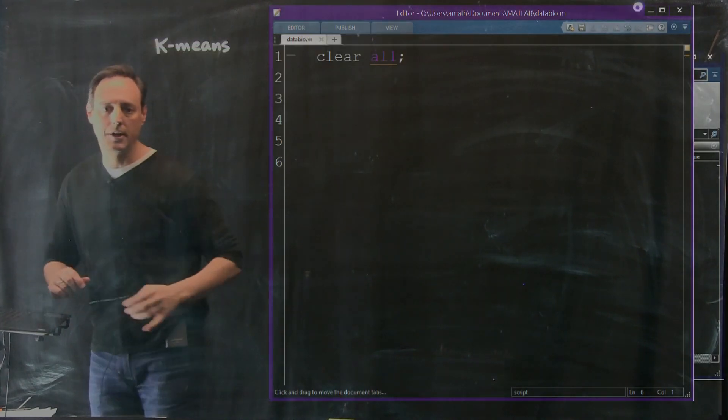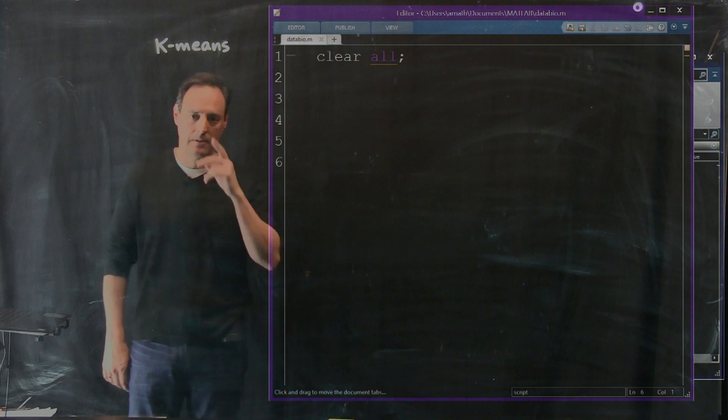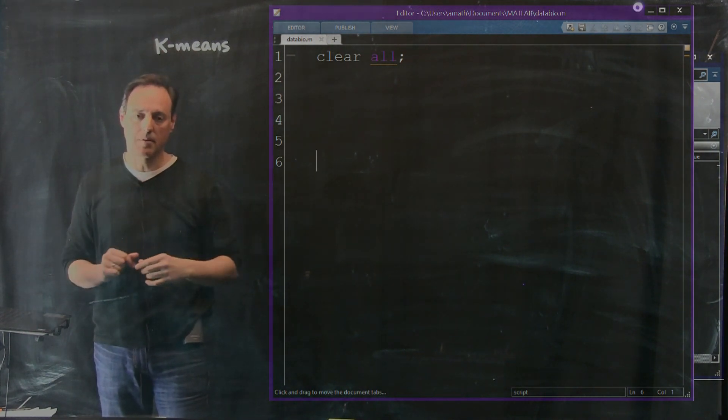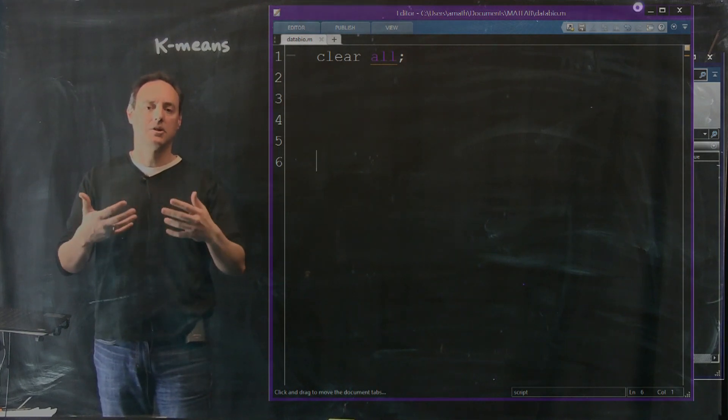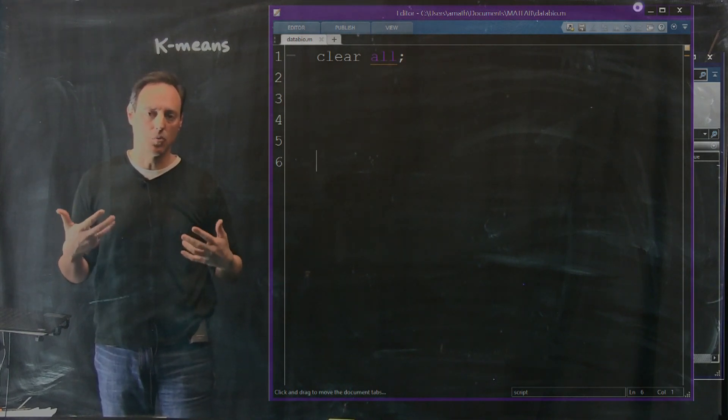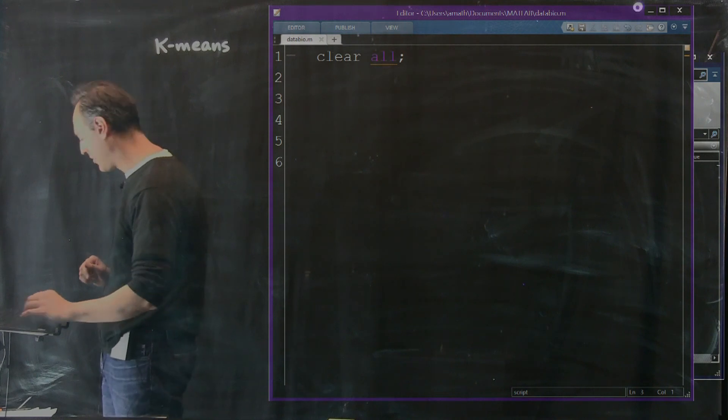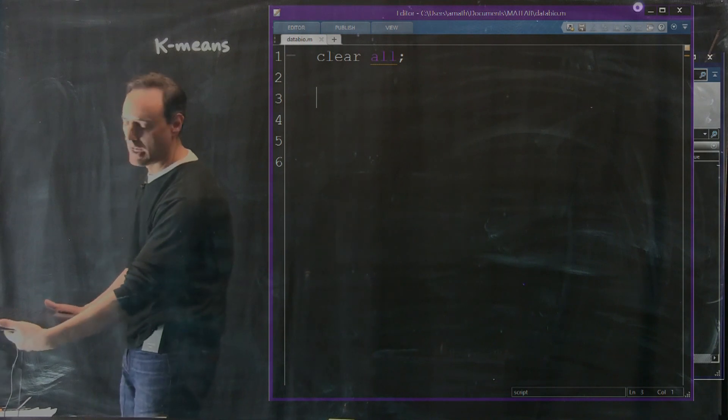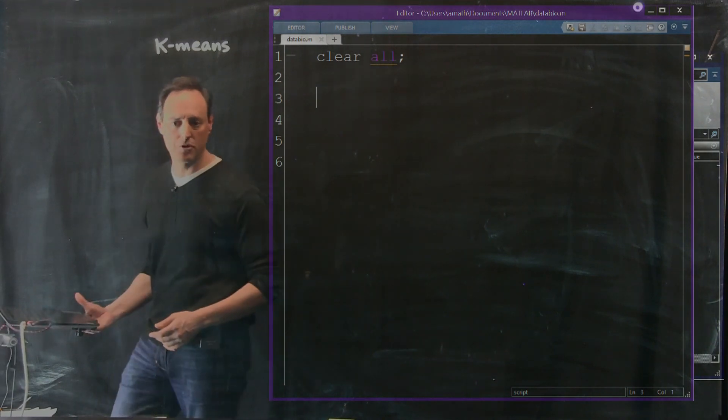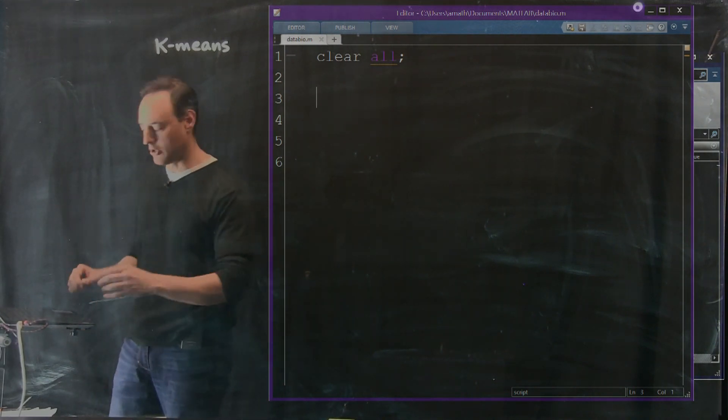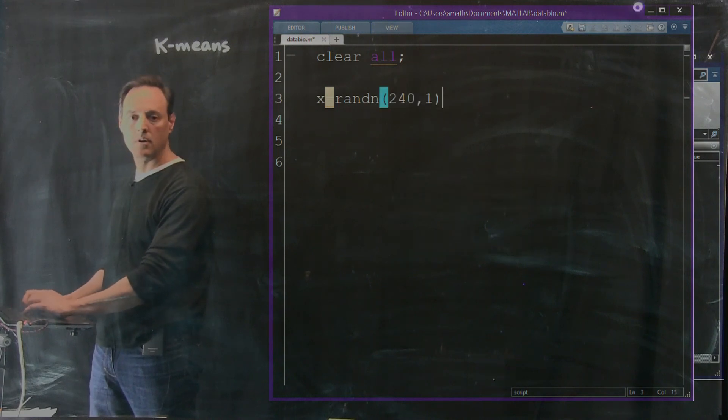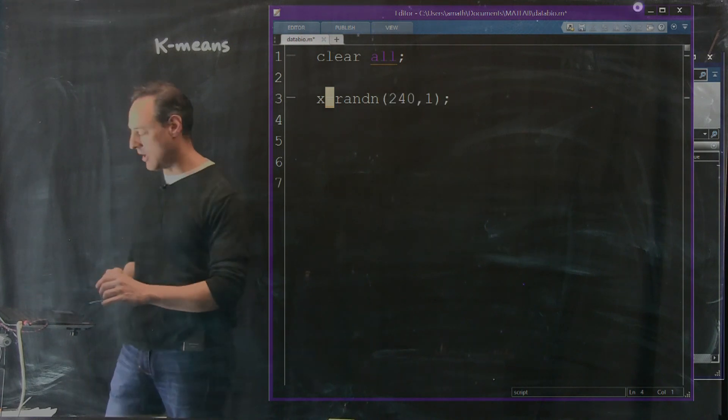When we switch over to MATLAB, here it is. We've got a programming box here. There is actually a k-means algorithm in MATLAB and I'll show it to you at the end. But the first thing I want to do is illustrate the process of how k-means works. We'll do this by first constructing some data. I'm first going to make up some random variables, and the random variables are going to be Gaussian distributed.